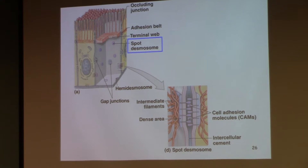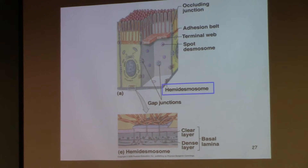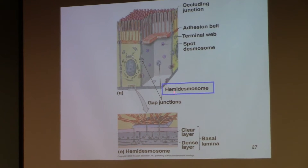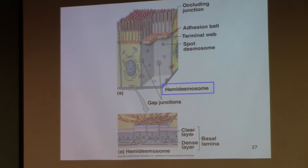That's a spot desmosome. The last one to worry about is a hemidesmosome. Where do I find hemis? They are only on the floor of the cell — they're anchoring the floor to the basement membrane. It kind of looks like a spot desmosome, kind of looks like an adhesion belt, but it's just half of a spot desmosome. It interjects proteins into the basement membrane to anchor the cell so it won't slide around on the basement membrane.